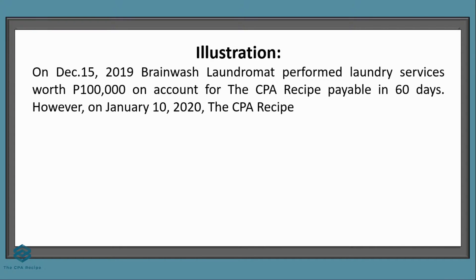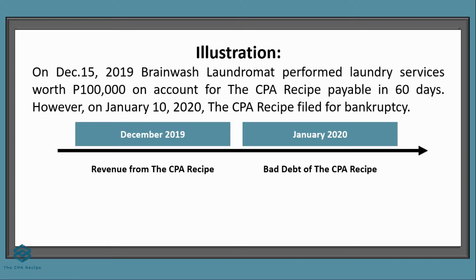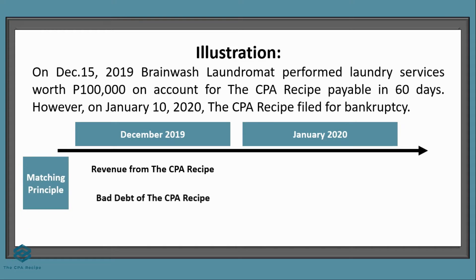In our previous example, let's assume a monthly period. The revenue was recorded on December 2019, so it appears on the income statement for December 2019. However, the bad debts expense would be reported on January 2020. If you watched Accounting Heist Episode 6, you know this violates the matching principle — expenses should be matched to the revenue to which they relate. Since the bad debt relates to the CPA recipe revenue, both should appear in the same period.